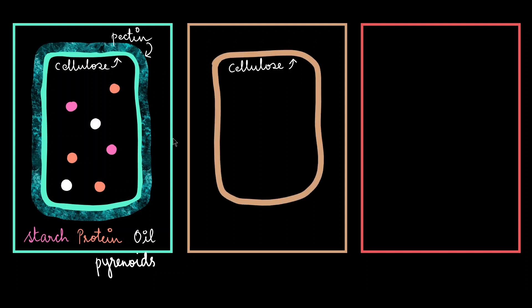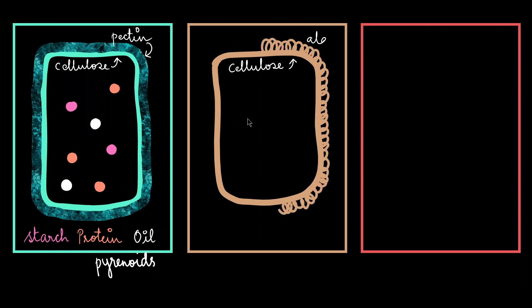The brown algae cell wall has cellulose which is covered by a complex carbohydrate called as algin. They store complex carbohydrates like laminarin and mannitol in their cytoplasm.